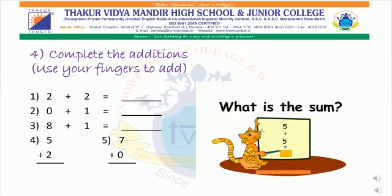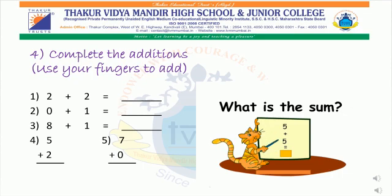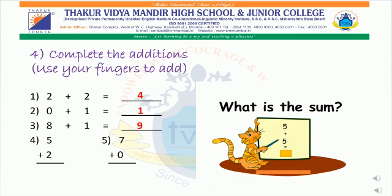Complete the addition sums. Children, you can use your fingers to add. Let us begin: two plus two is equal to four, zero plus one is equal to one, eight plus one is equal to nine, five plus two is equal to seven, seven plus zero is equal to seven.